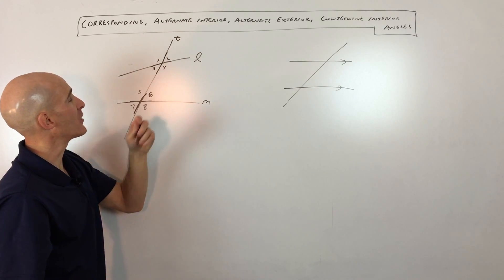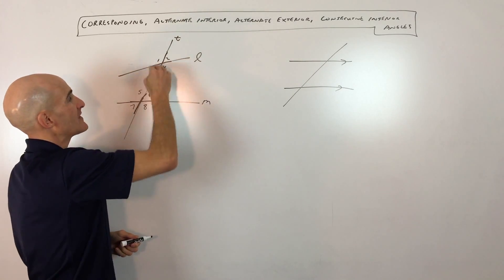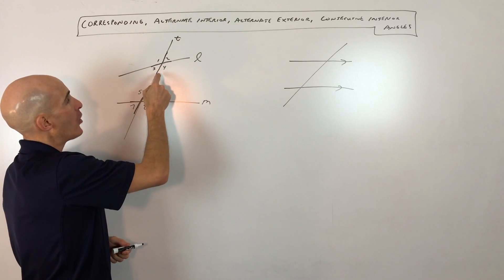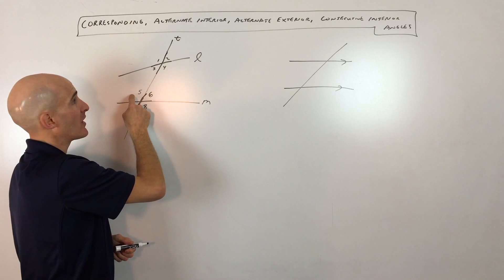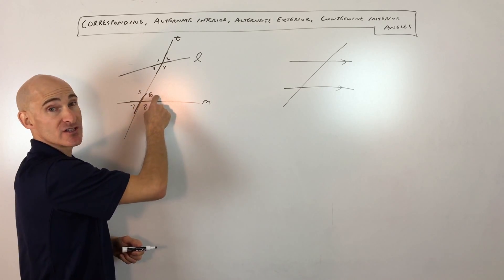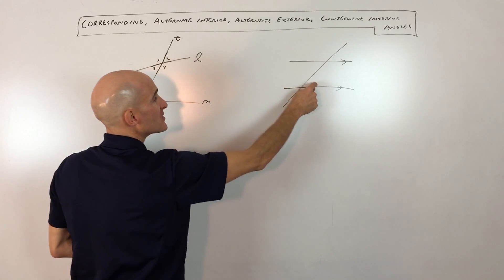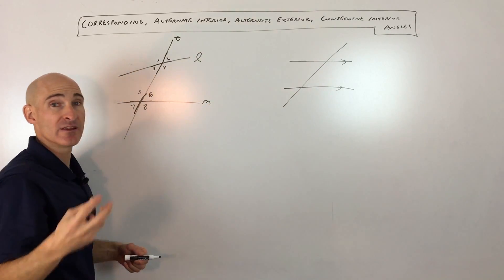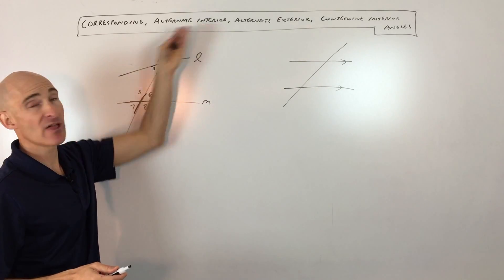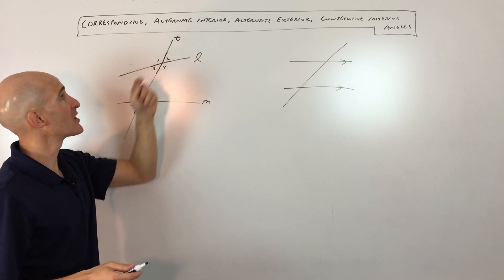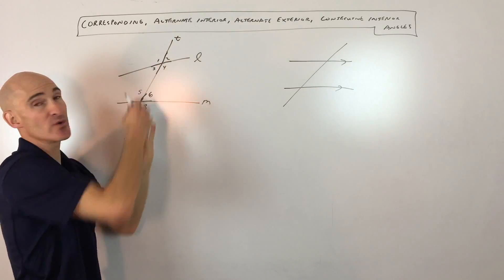Next we're talking about alternate interior angles. Interior means in between these two lines, on the inside. Alternate means one's on the right, one's on the left. So like 4 and 5 are alternate interior angles, and 3 and 6 are alternate interior angles. Now when the lines are parallel, the alternate interior angles are going to be congruent — meaning they're equal, they have the same measurement. A lot of times the name will remind you: alternate means they alternate, one left, one right; interior means they're in between, on the inside.